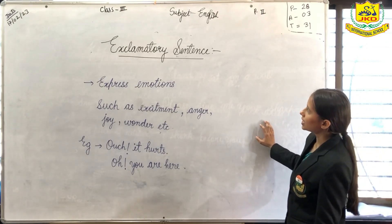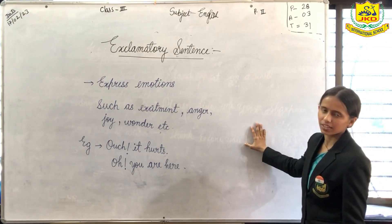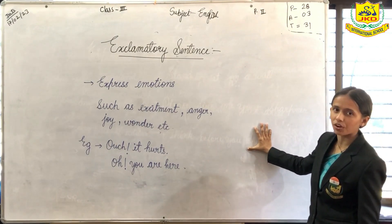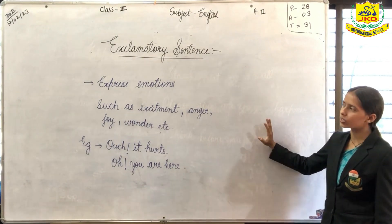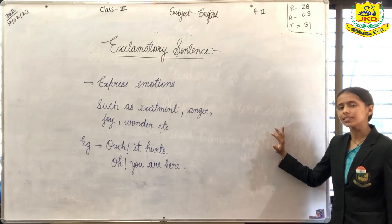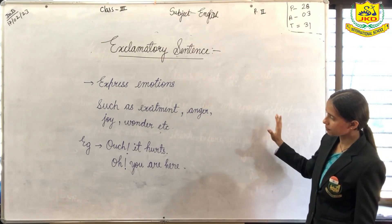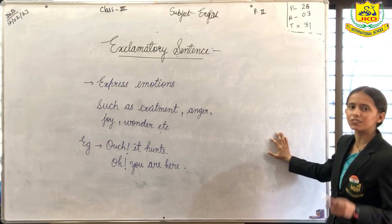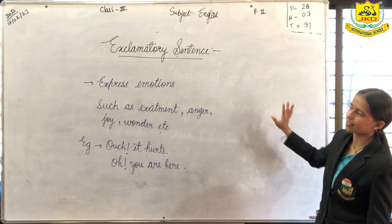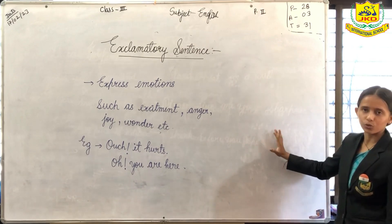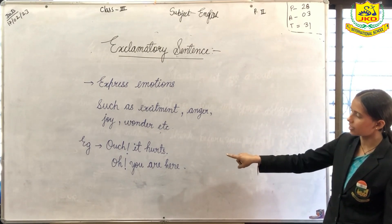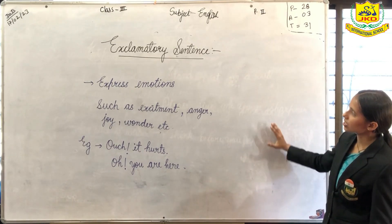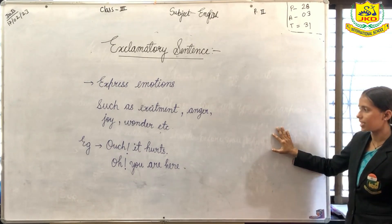The fourth type of sentence is exclamatory sentence. Whenever you express your emotions such as excitement, anger, joy, wonder, etc., then all such type of sentences come under exclamatory sentence. For example, if they say 'ouch, it hurts' — here ouch is the feeling, the person is feeling hurt, so it would come under exclamatory sentence. 'Oh, you are here!' — words such as oh, hello — all such words come under exclamatory sentence.